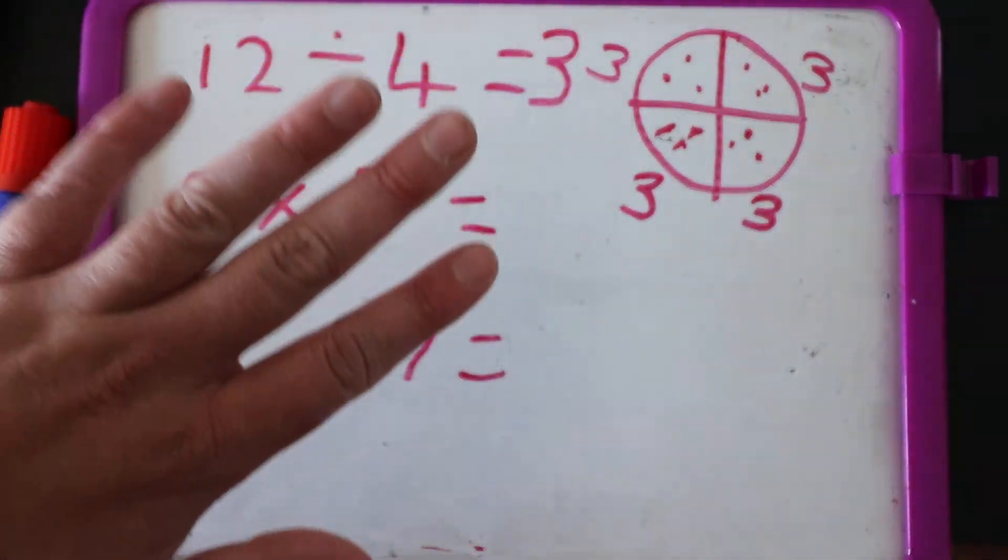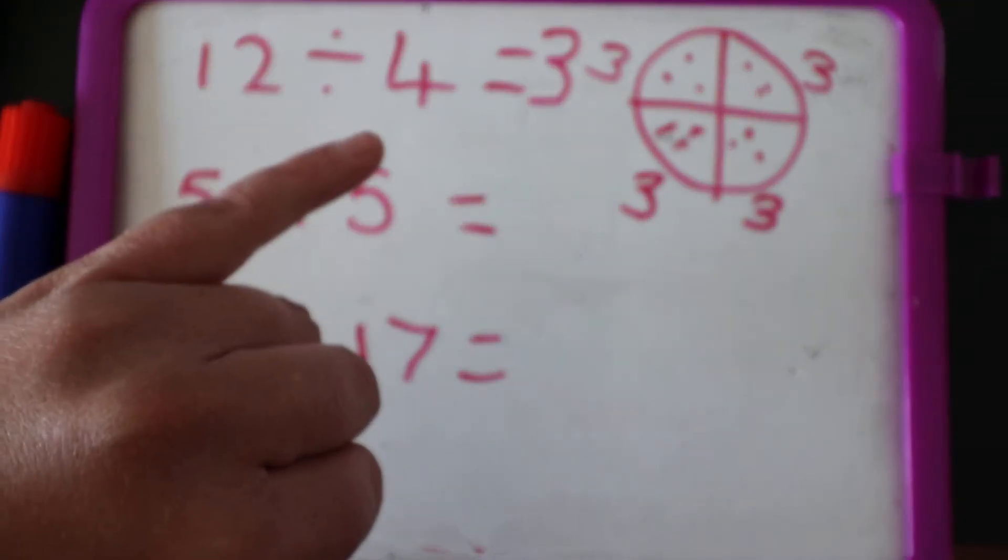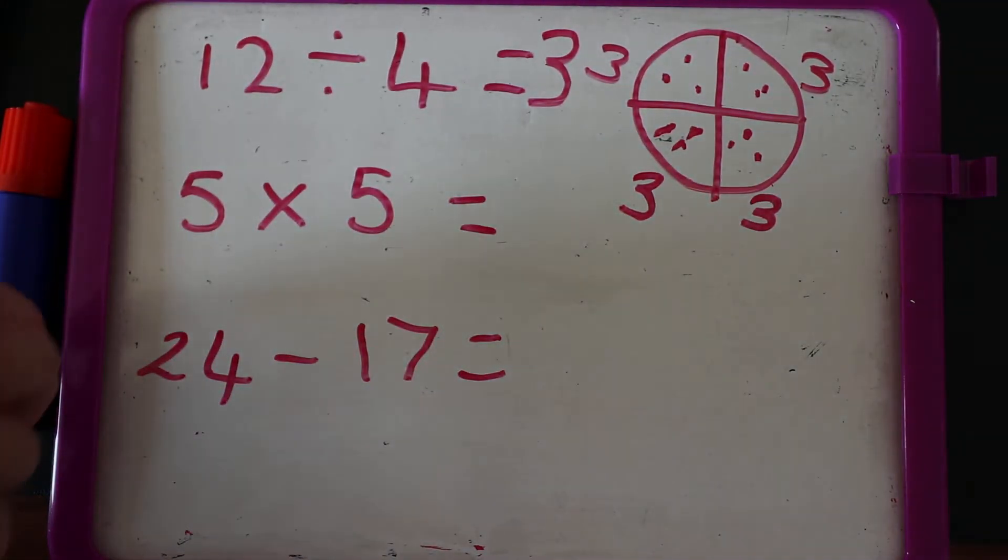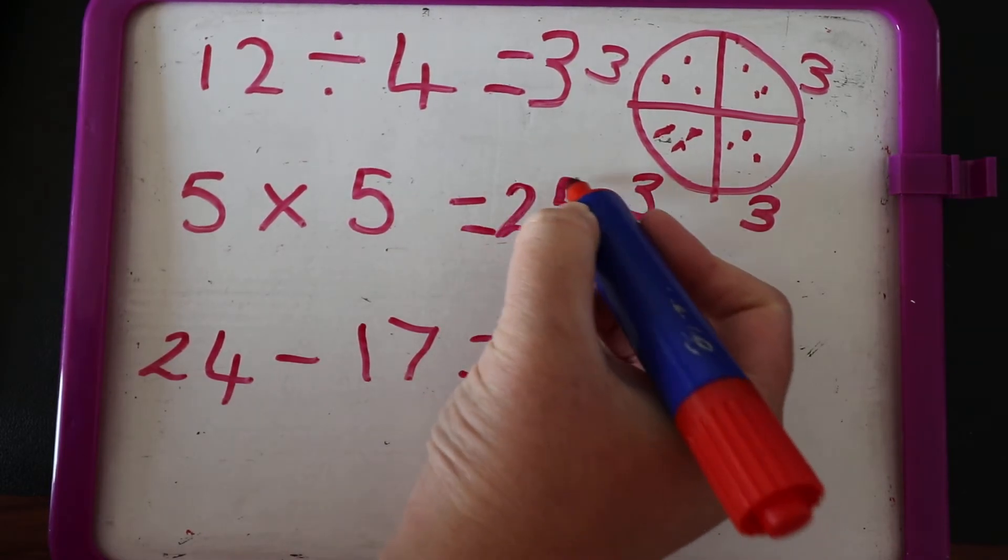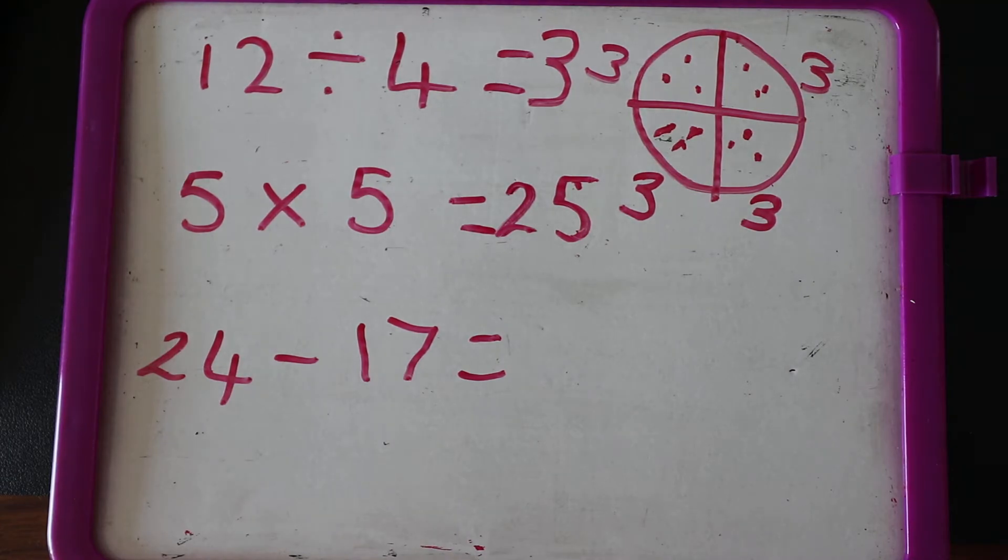Okay, five groups of five. Show me five fingers and we're going to count in fives: five, ten, fifteen, twenty, twenty-five, my favorite number, twenty-five. And the last one, twenty-four take away seventeen. Now this would be tricky if you did your tens and ones because you have to do something that we haven't learned yet.